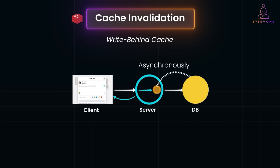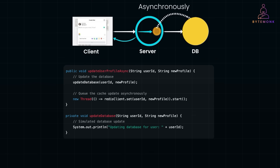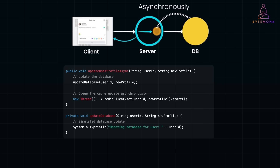In the write-behind strategy, the cache is updated asynchronously after the database is updated. The database remains the source of truth, and the cache update happens in the background. The application writes to the database first, and then a background process — such as a queue or thread — updates the cache after the write is complete. This results in faster writes since cache updates are deferred, and it is suitable for high write-throughput systems. However, the cache might temporarily hold stale data until the update completes, and it is more complex to implement due to asynchronous handling.